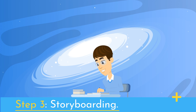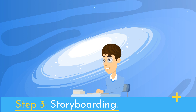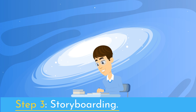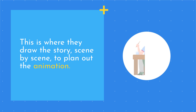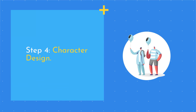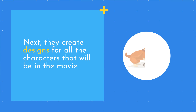Step 3: Storyboarding. This is where they draw the story, scene by scene, to plan out the animation. Step 4: Character Design. Next, they create designs for all the characters that will be in the movie.